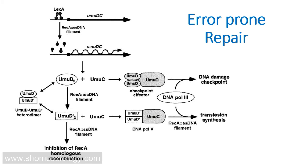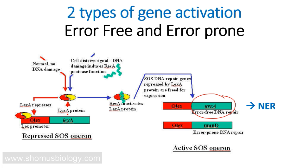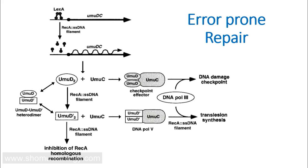In that way, UMU is involved in both checkpoint arrest and error-prone repair. On the other hand, the UVR proteins are involved in Nucleotide Excision Repair, which is error-free DNA repair. So ultimately, with the help of the SOS response, the cell can stop cell cycle progression, check for DNA damage, repair DNA with error-free repair, as well as repair DNA with error-prone repair by reassembling the replication fork and restarting DNA replication. That's all about SOS response DNA repair.